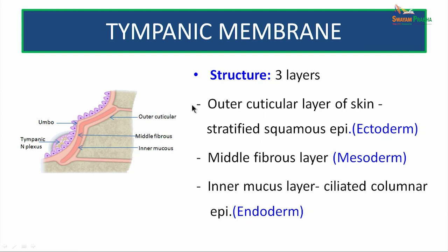The tympanic membrane is a tri-laminar structure where three germ layers are found close to each other. The outer cuticular layer of skin is formed of stratified squamous epithelium — hairless, derived from the ectoderm — and is continuous with the external acoustic meatus. There is a middle fibrous layer derived from the mesoderm. The inner layer, derived from the endoderm, is ciliated in areas and has both columnar and squamous epithelium.